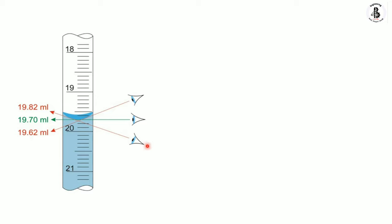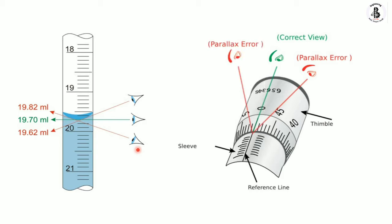Reading from the top or bottom position generates parallax error. The second example is reading from a micrometer: the green position indicates the correct angle for taking measurements. You should not take readings from the right or left side, as this introduces error. Always position yourself properly with respect to the instrument to minimize parallax error.